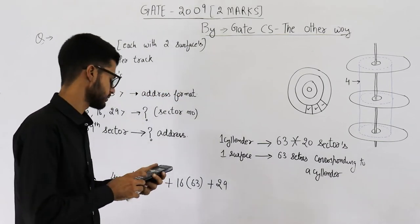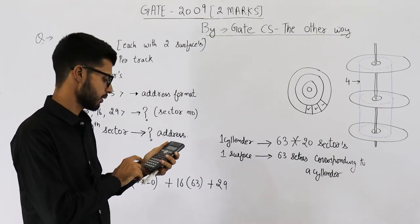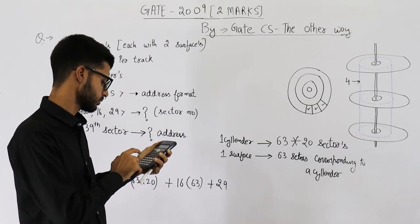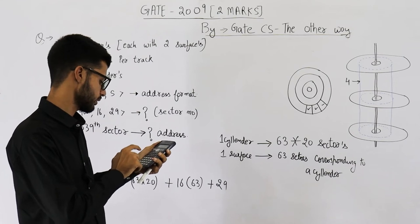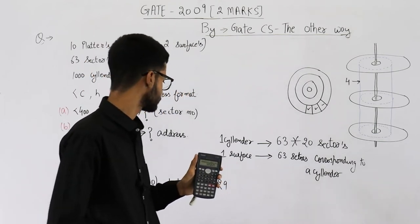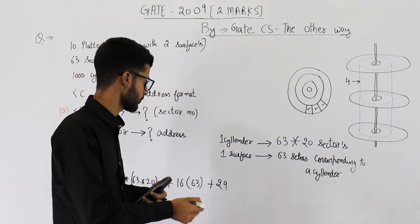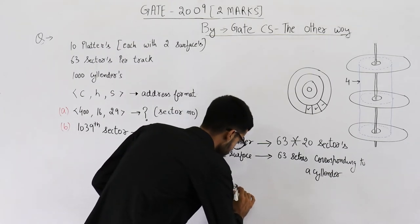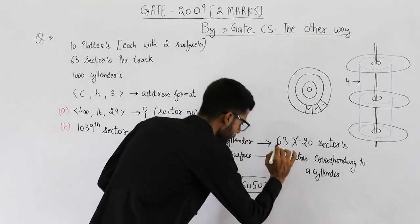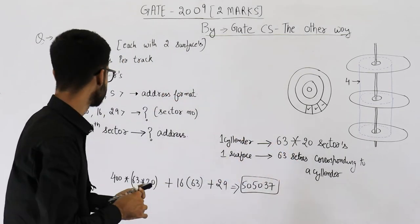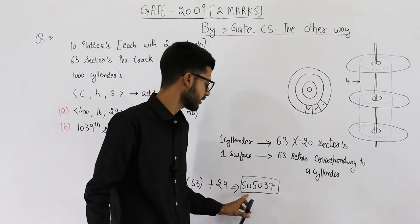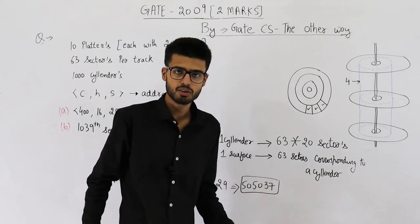So the total sector number is: 400 × 63 × 20 + 16 × 63 + 29. This equals 505,037. So the answer to the first part is that the sector number corresponding to the given address is 505,037.